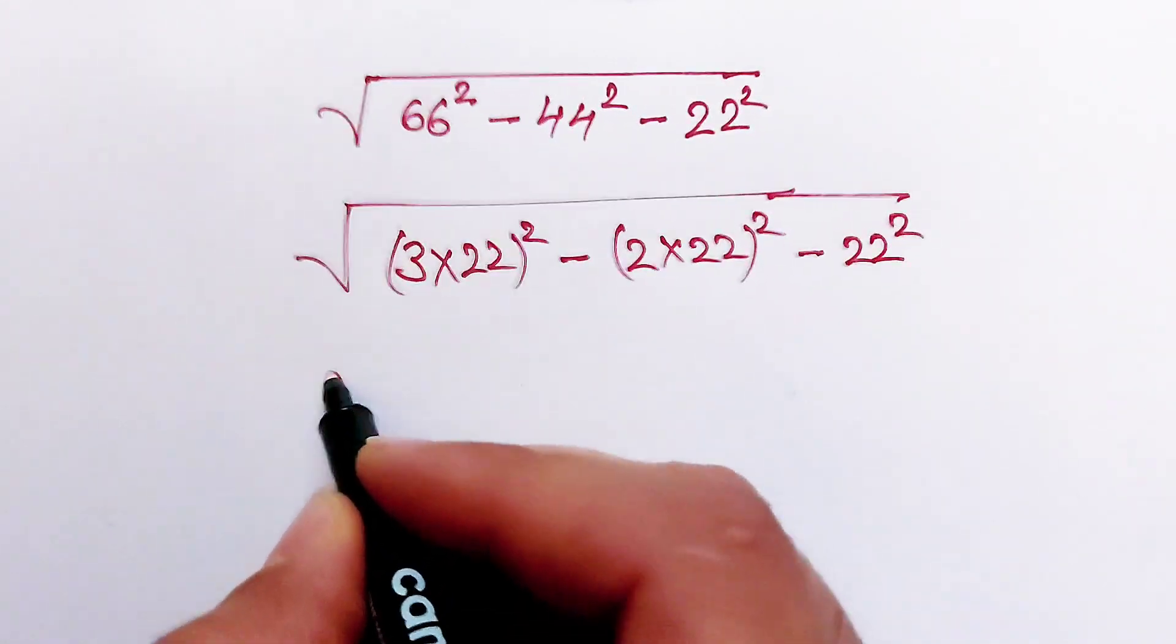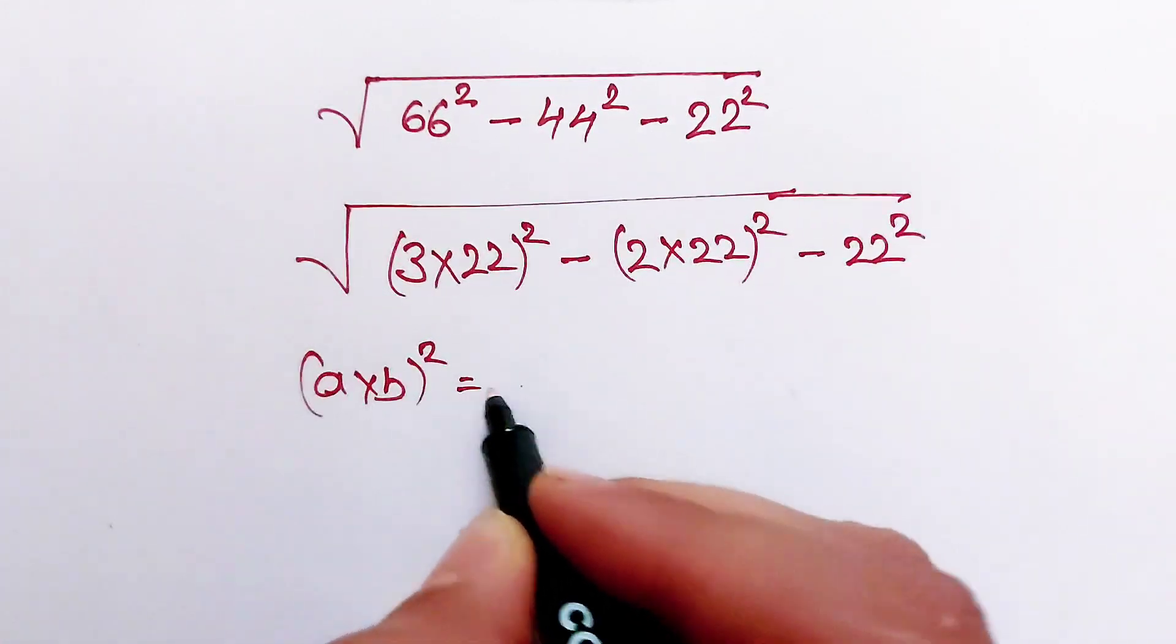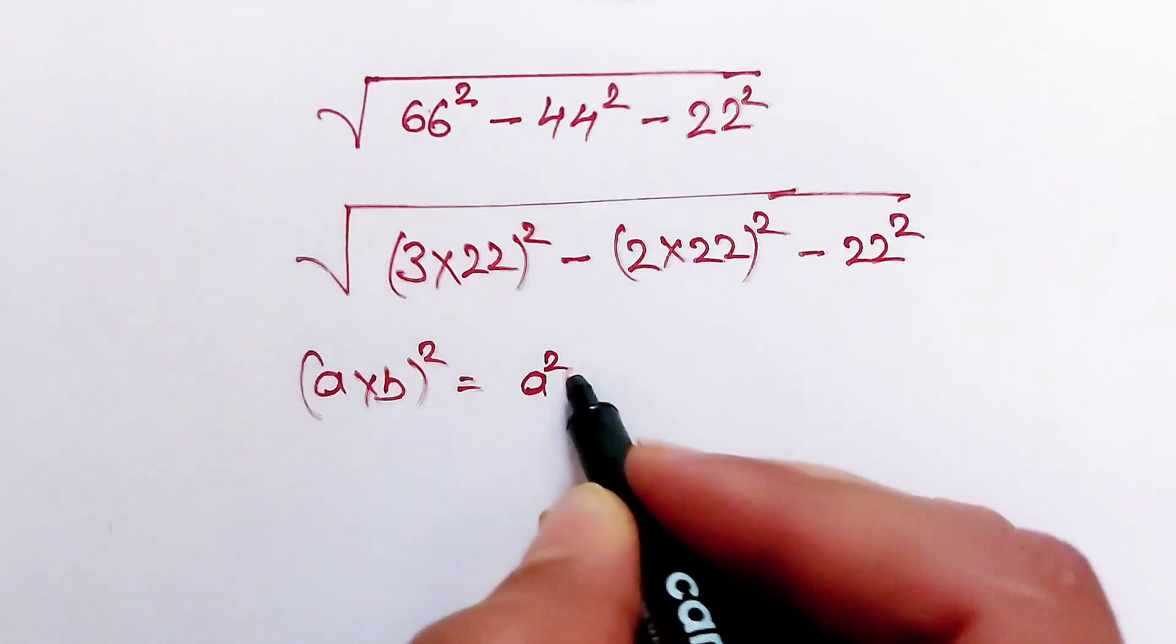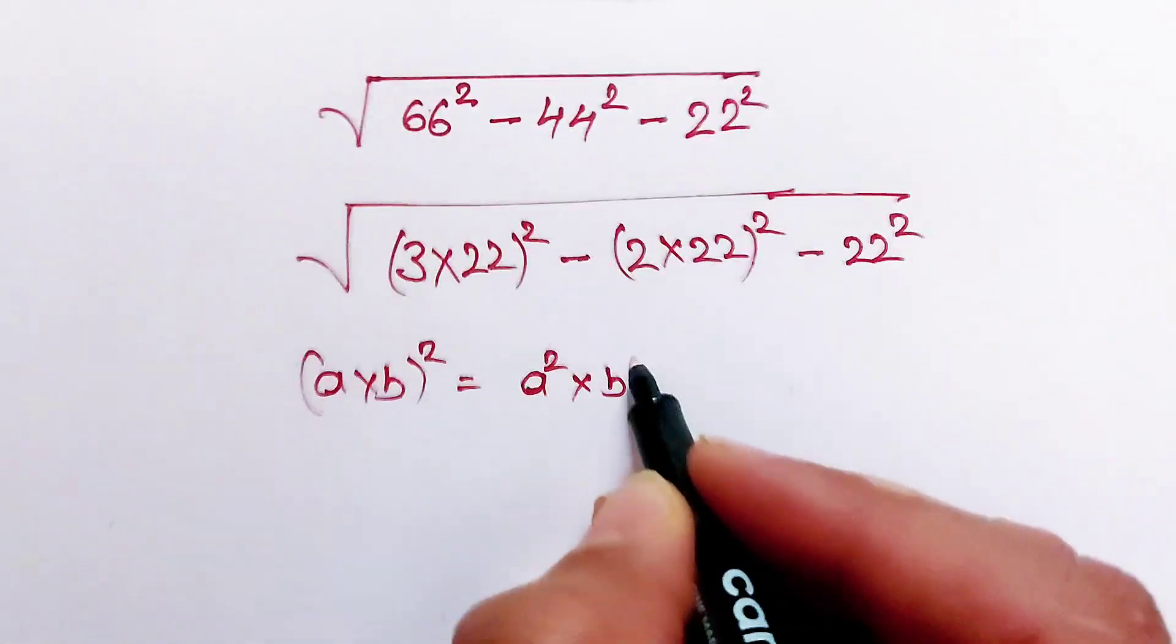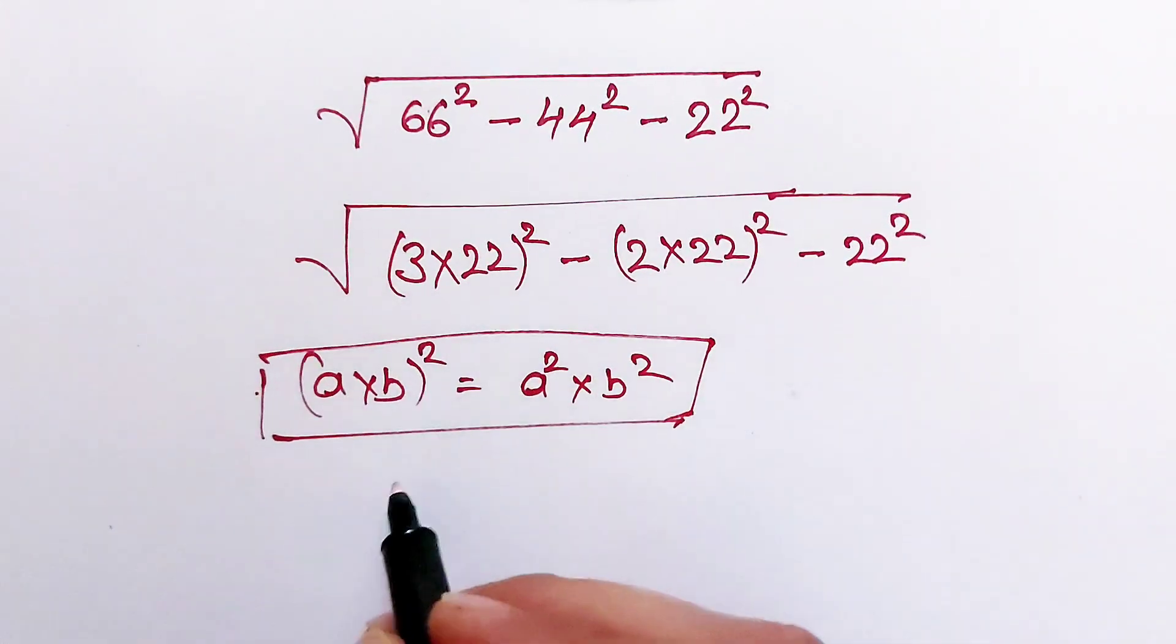A multiply b whole squared, which is equal to a squared multiply b squared. Applying this property here, what we get.